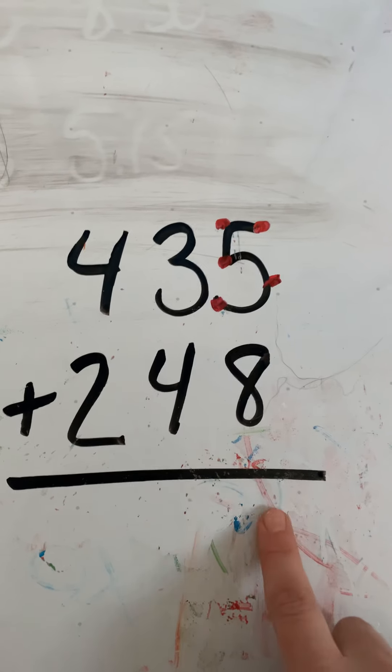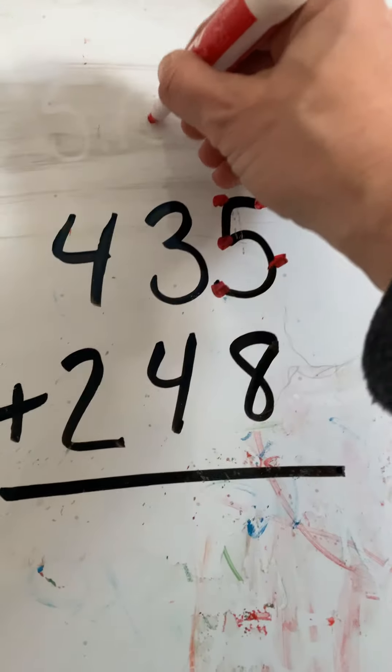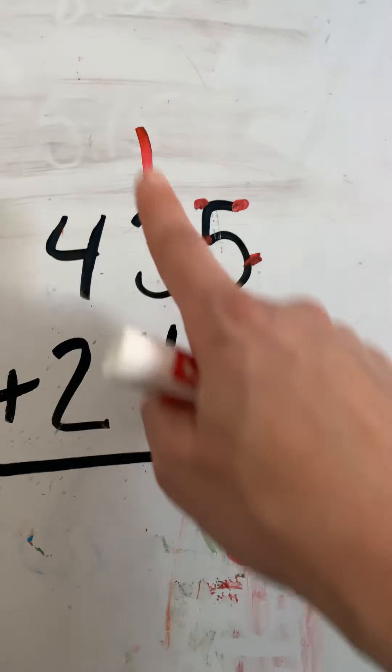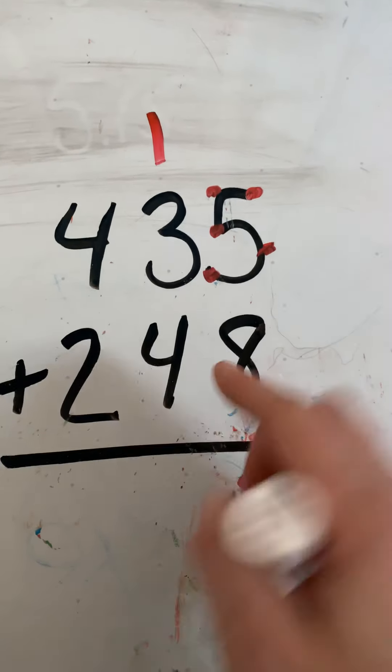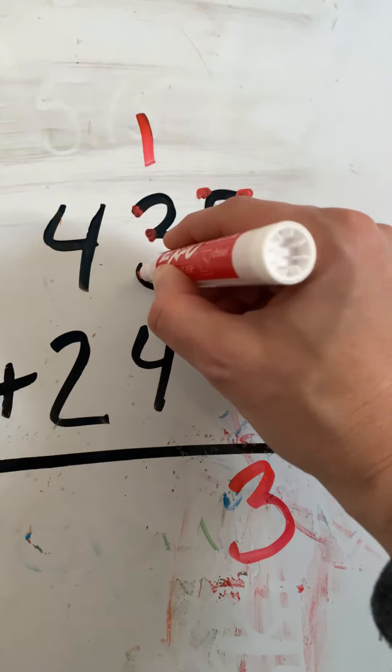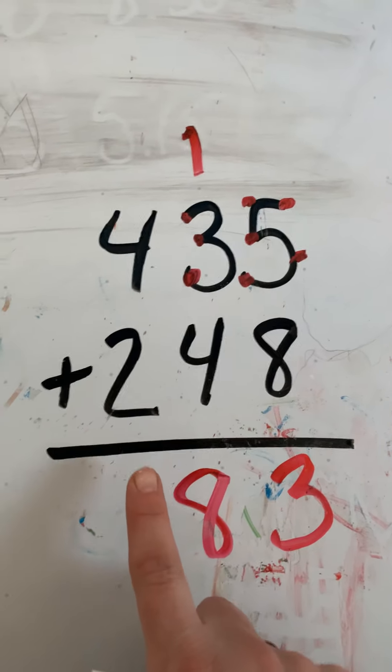Does 13 fit down here? No. 13 is a 1 and a 3. Okay, go to the next spot. Don't forget adding all three numbers. Here we go. 4, 5, 6, 7, 8. Okay, our last spot, our 100 spot. Ready?